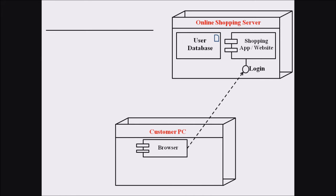Next, we discuss the user database, which is an artifact. This user database artifact is on the side of the Online Shopping Server and is represented with the help of an artifact symbol. The shopping app or shopping website is related to this artifact named user database. Once the user provides their login credentials, those credentials are verified against the user database artifact.